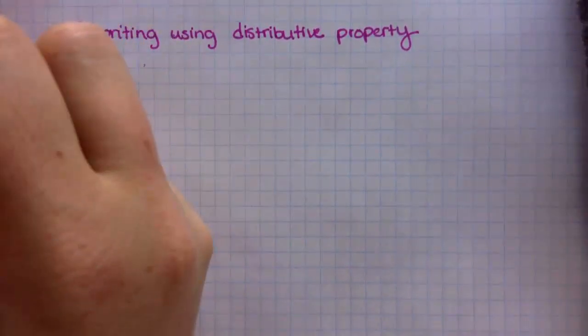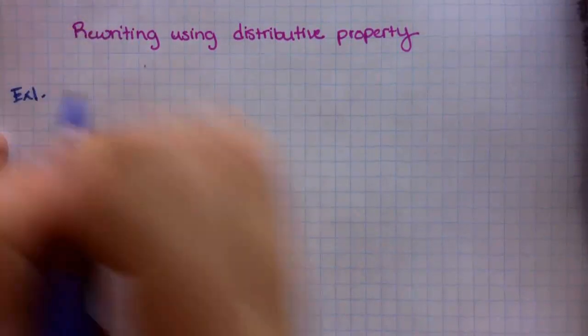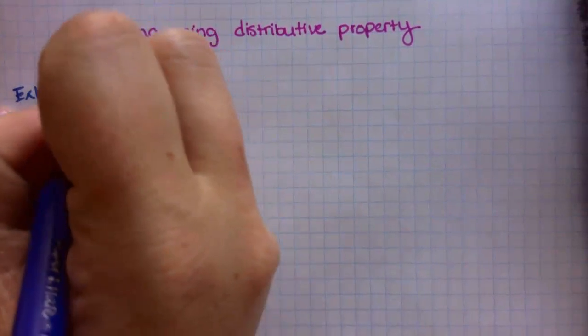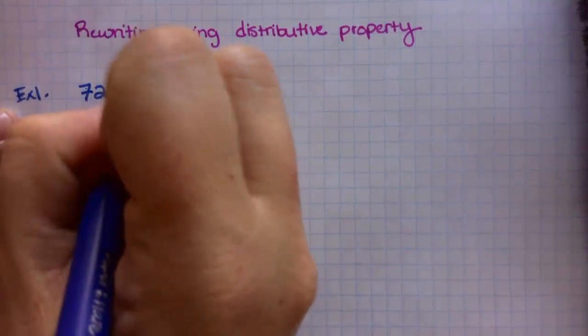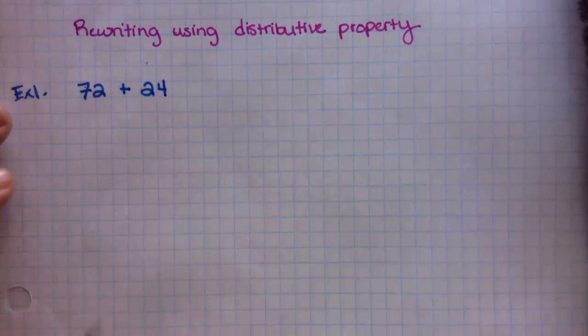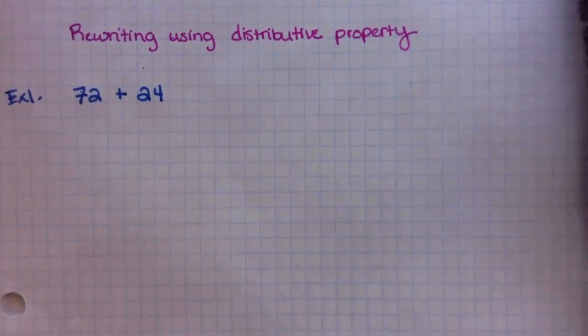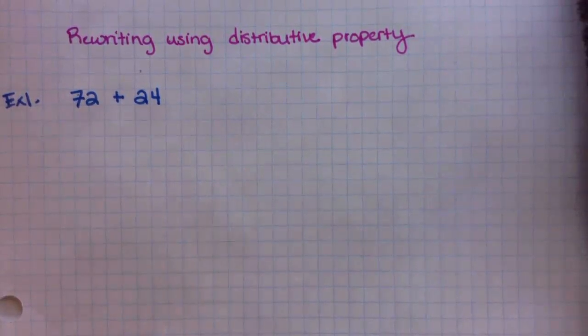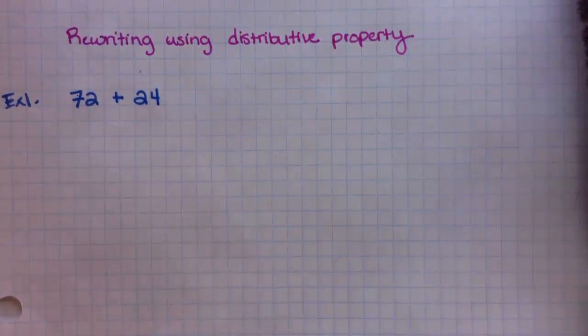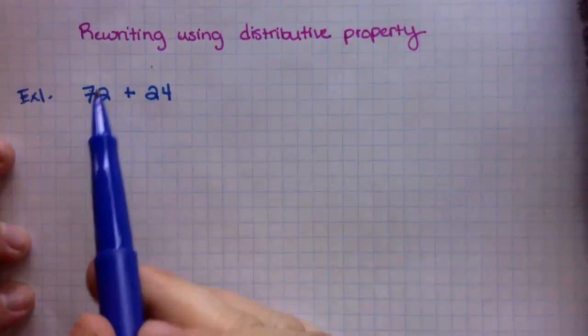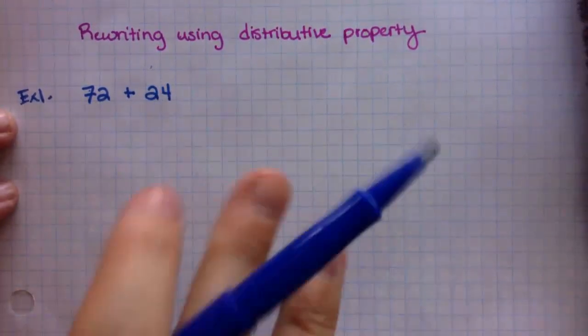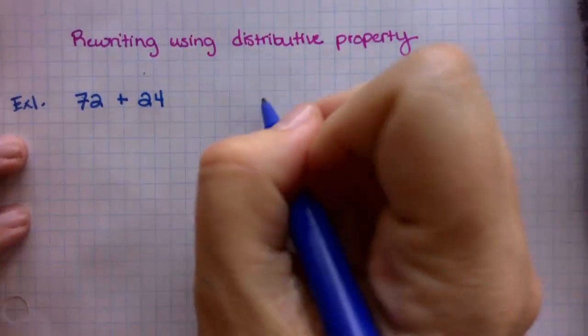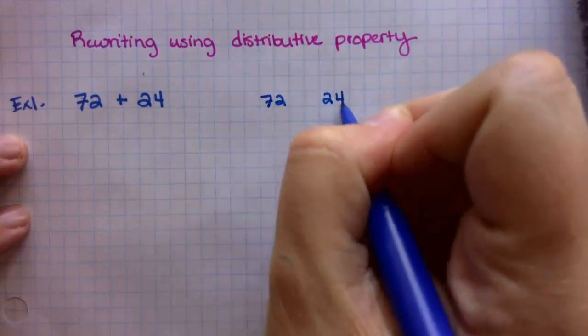Okay, so let me do an example. Example 1. It's going to ask you to rewrite an expression, 72 plus 24, using the distributive property. So I'm going to show you how to rewrite it and then I'm going to explain how the distributive property works. What you're going to do is take these two numbers and prime factor them, just like we've done in the past.